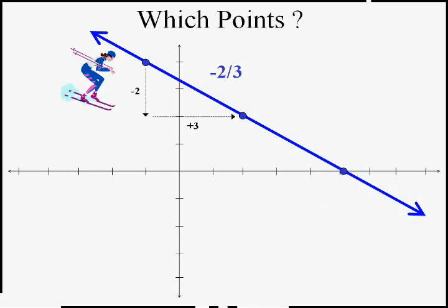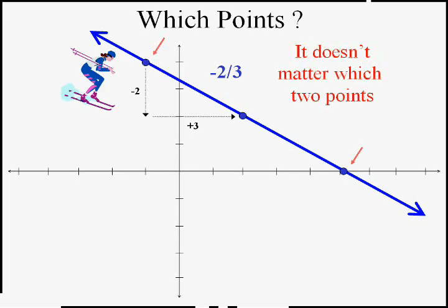However, what if I picked these two different points? I should get the same slope, shouldn't I? Between these two points I went down four and over six. If you take the fraction negative four-sixths and reduce it, you still get negative two-thirds. So it doesn't matter which two points you pick — you should get the same slope defined by the rise or fall over the run.